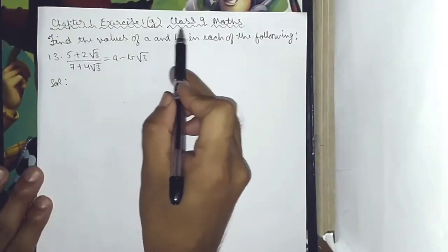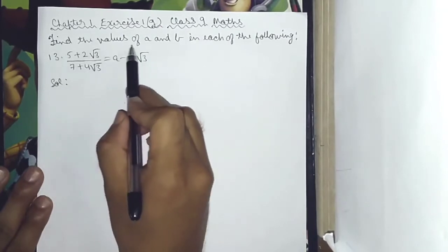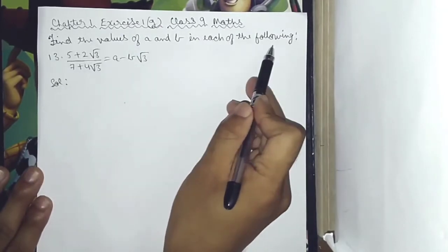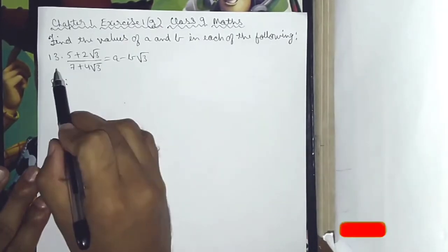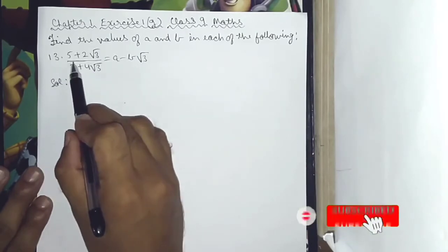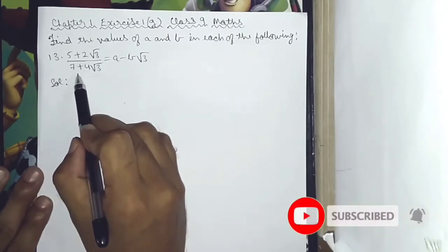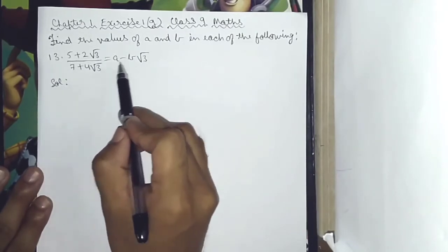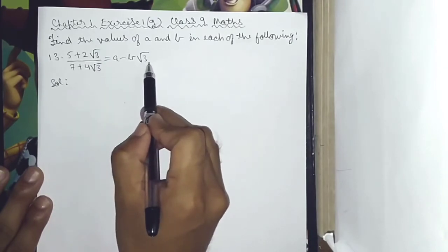Chapter 1, 1G Plus 9 Maths. Find the values of a and b in each of the following. Chapter 1, number 13: 5 plus 2 root 3 divided by 7 plus 4 root 3 is equal to a minus b root 3.